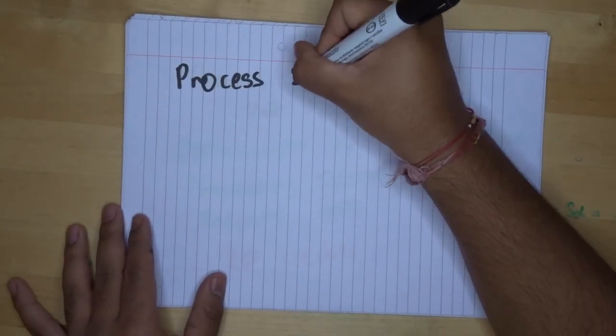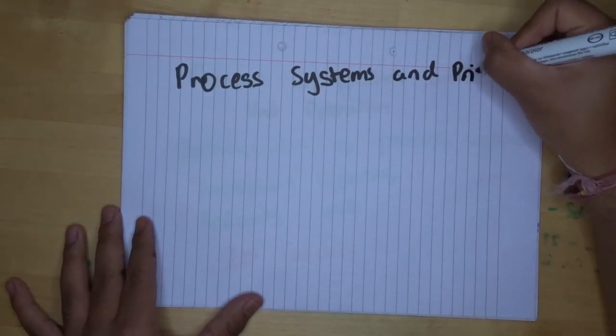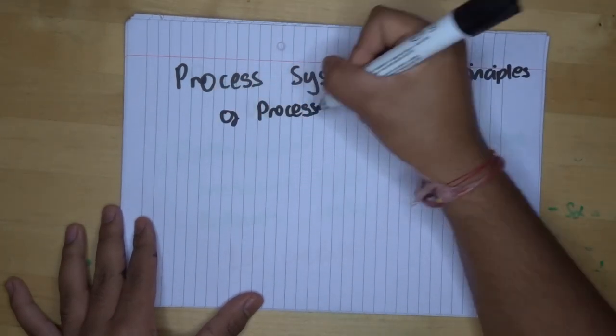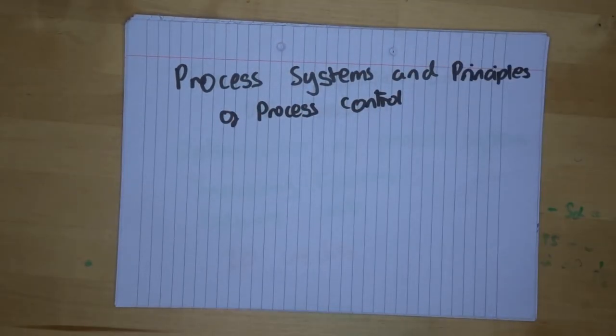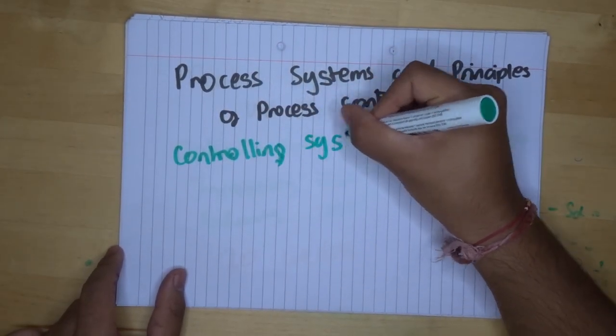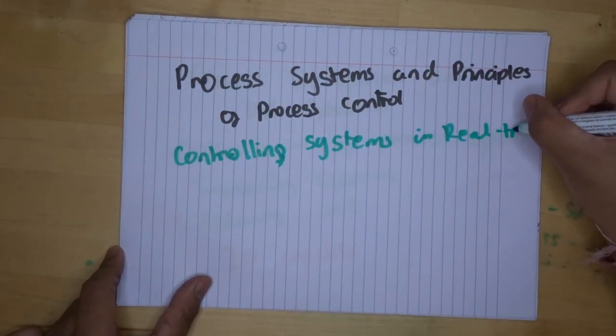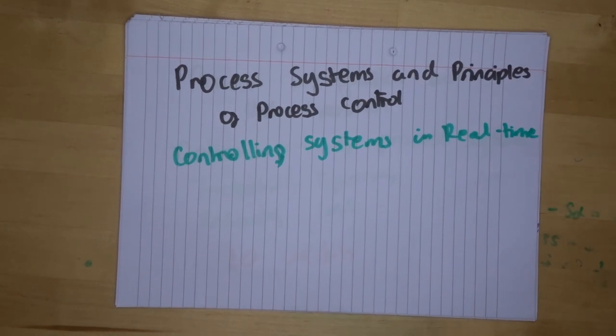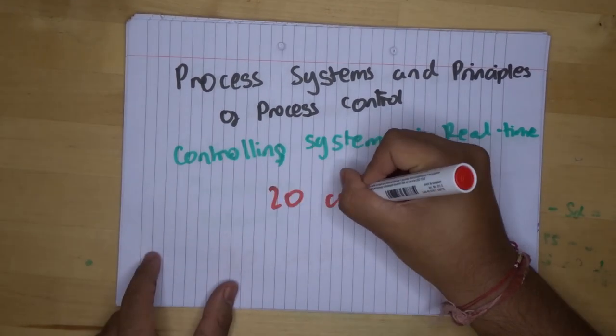This next module is about process systems and principles of process control. Now, in this module, you learn about how to control systems in real time in order to fix any unexpected errors that occur during the process. And this module is, again, 20 credits.